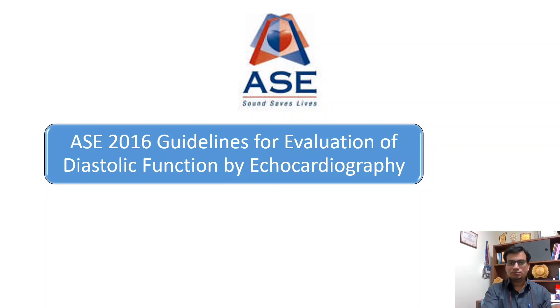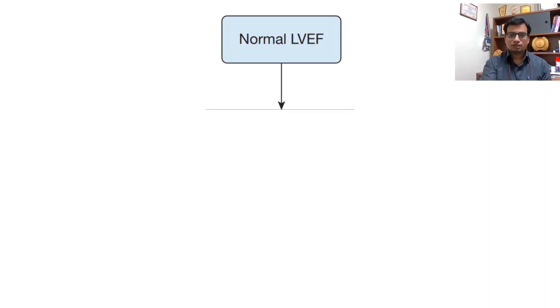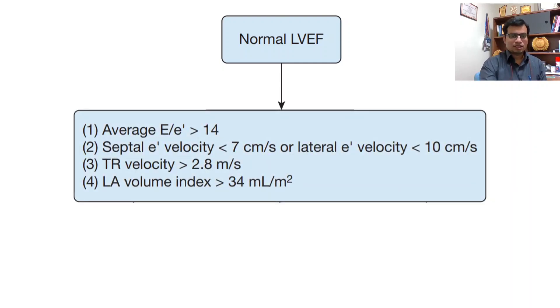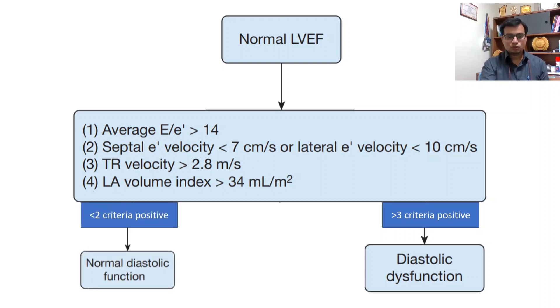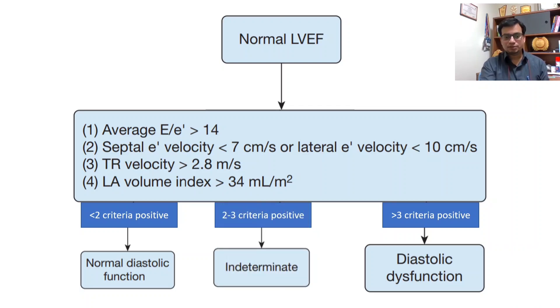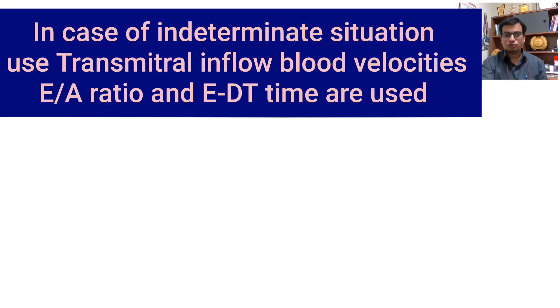Now let's discuss the algorithm — the practical approach to evaluate diastolic function as per the ASE 2016 guideline. For patients with normal LV ejection fraction, the guidelines recommend 4 measurements with cutoff values denoting an abnormal finding: average E/E' more than 14, septal E' velocity less than 7 cm/s, TR jet velocity maximum more than 2.8 m/s, and LA volume index more than 34 ml/m². If more than 3 criteria are positive, you can be very sure of diastolic dysfunction. If less than 2 criteria are positive, diastolic function is normal. If only 2 or 3 criteria are positive, it is an indeterminate situation and the transmitral E/A ratio should be assessed.